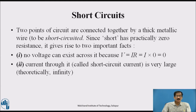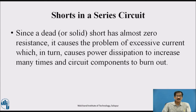Short Circuits: two points of a circuit are connected together by a thick metallic wire to be short-circuited. Since a short has practically zero resistance, it gives rise to two important facts. First, no voltage can exist across it because V = IR and R = 0, so V = 0. Second, the current through it, called the short-circuit current, is very large — theoretically infinite. Shorts in a series circuit: since a dead or solid short has almost zero resistance, it causes excessive current, which in turn causes power dissipation to increase many times and circuit components to burn out.